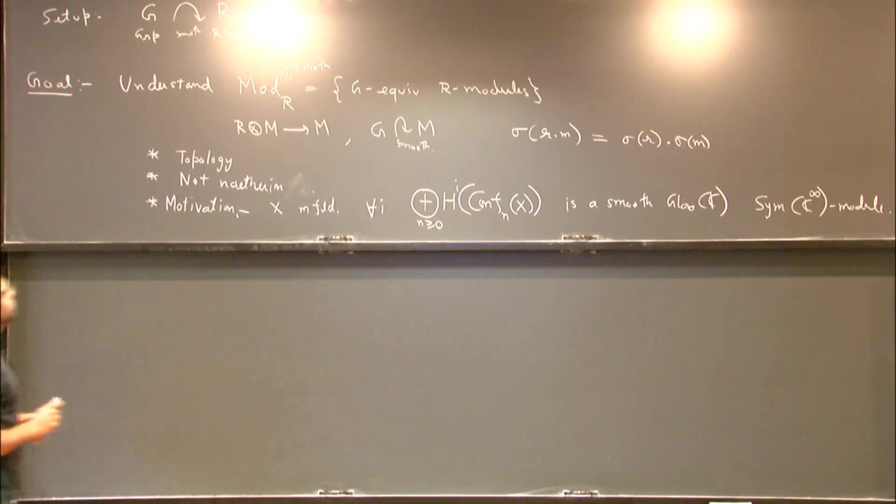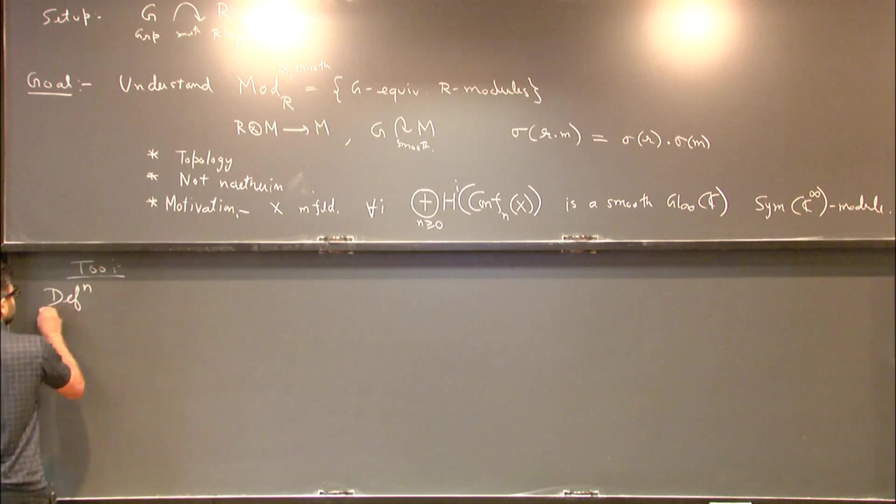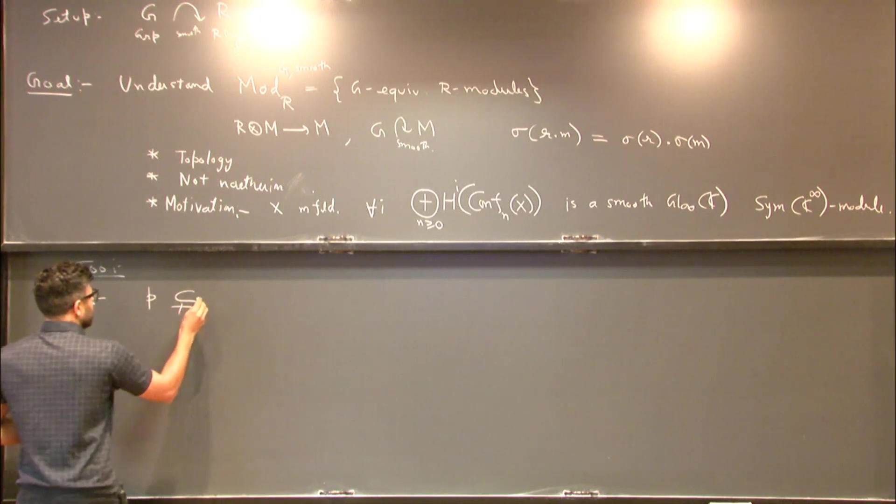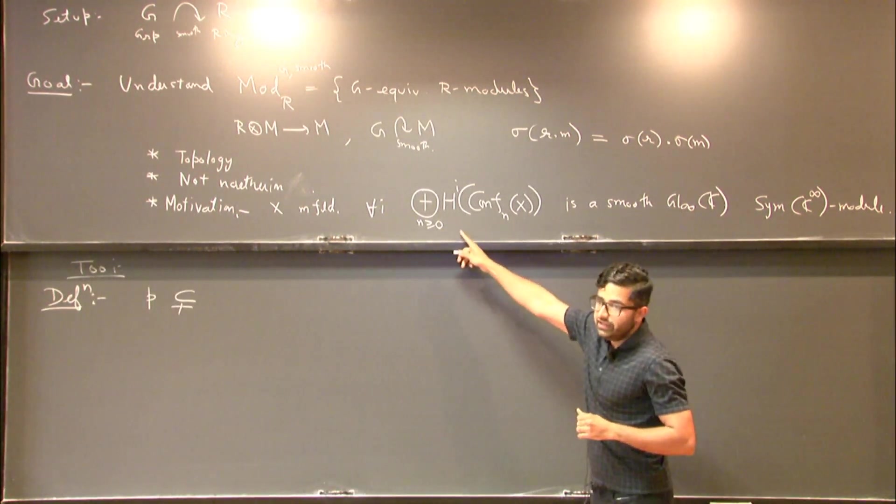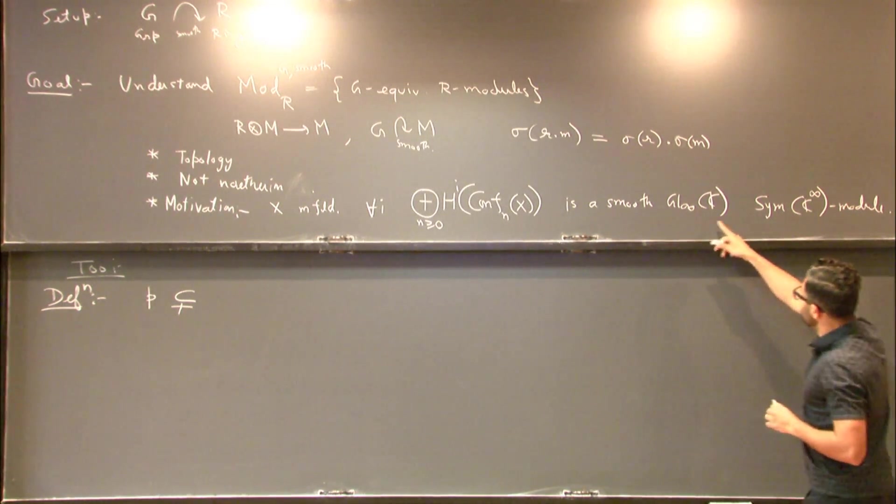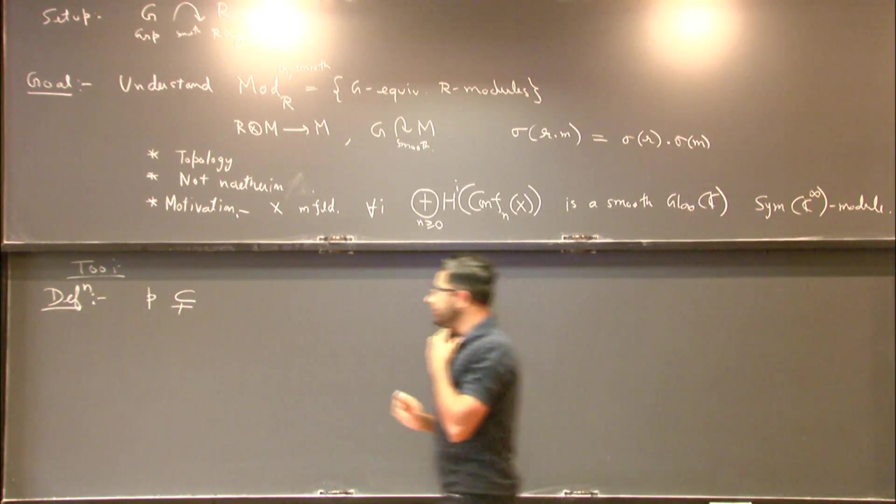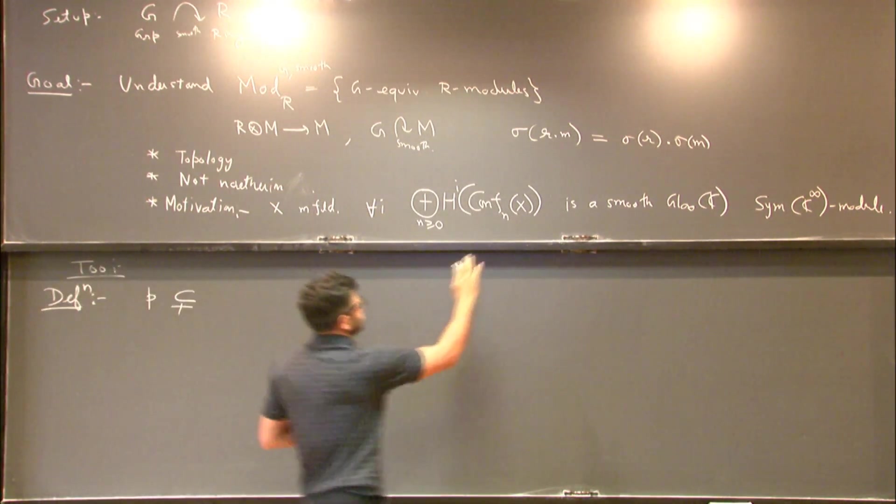So now I'm going to mention the tool that I want to employ to study this goal. So what is the tool here? So let me define the main notion of the talk, the prime. So suppose we have- What is the module, what is the ring, is it, you fix i here? Yeah, for all i, i is fixed and n is varying. And this is a smooth GL-infinity SIM-C-infinity module. This is the ring and that's the group. Okay. Right. Yeah, I'm taking complex here in this case, thanks.